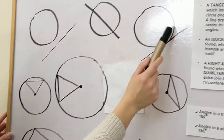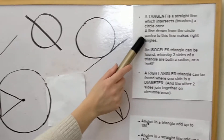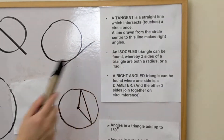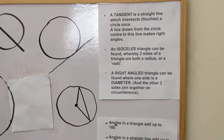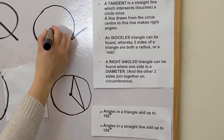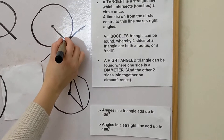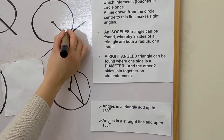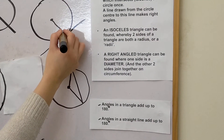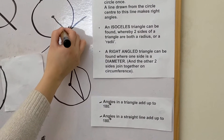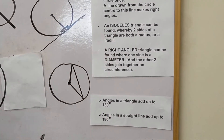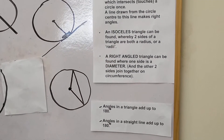It also says that a line drawn from the circle centre to the tangent makes a right angle. So if we have the circle centre there and we draw a line to the tangent, we get a right angle. This is something you're going to be looking out for in your various diagrams.